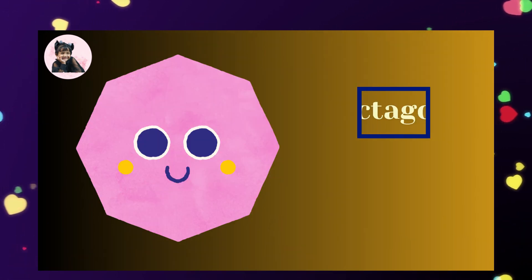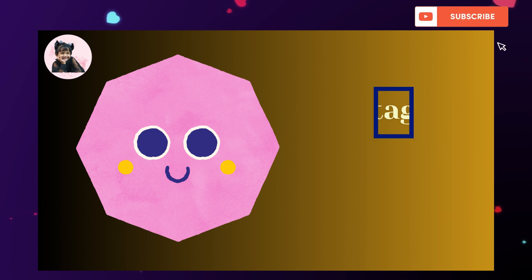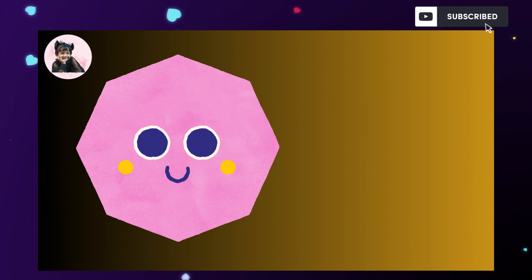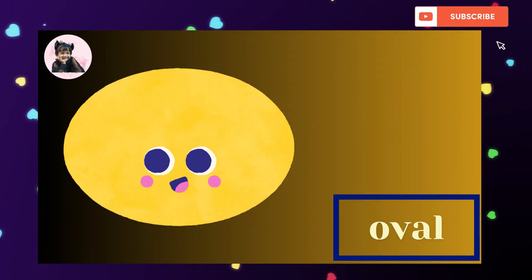Octagon. This shape is called octagon. Oval. This shape is called oval.